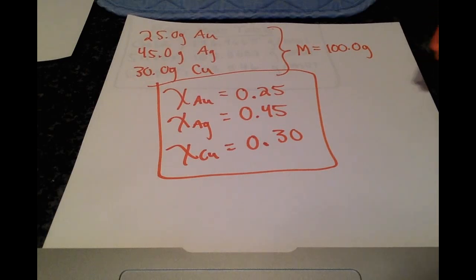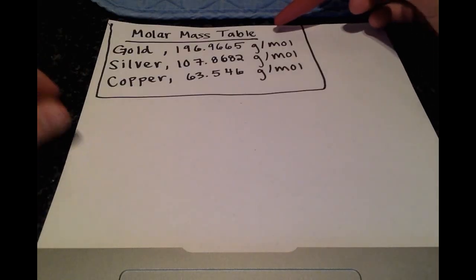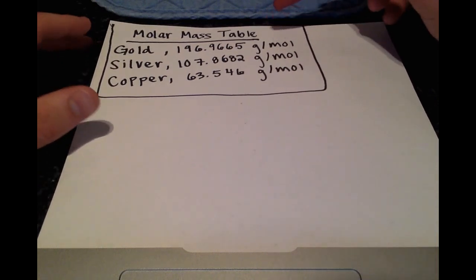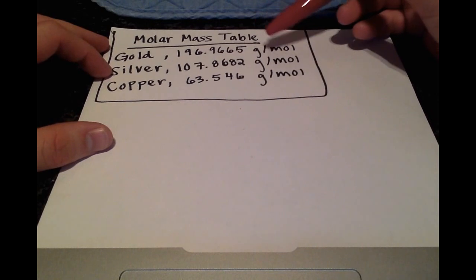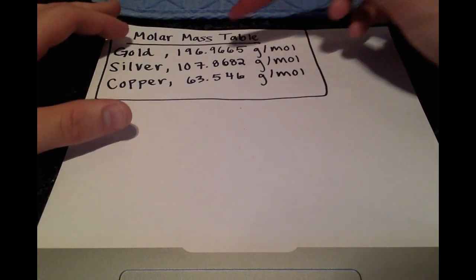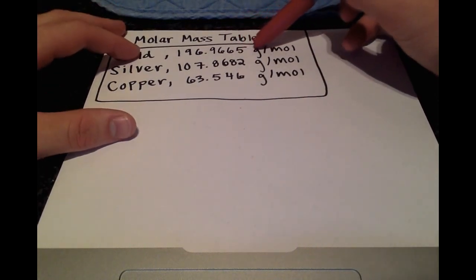Okay, so now we'll look at the mole fractions of each component. So this is the molar mass table that they're referring to. We have the molar masses for gold, silver, and copper. And this is a conversion factor we'll be using. It gives the grams of each component per one mole.